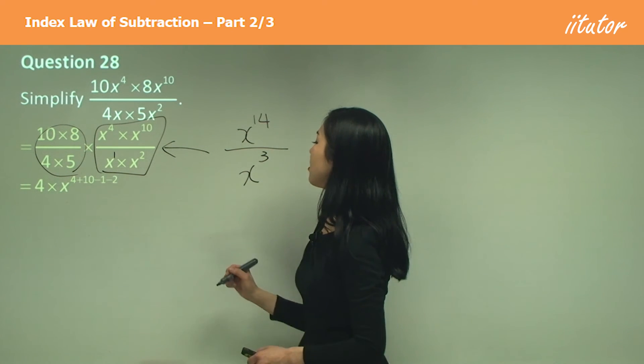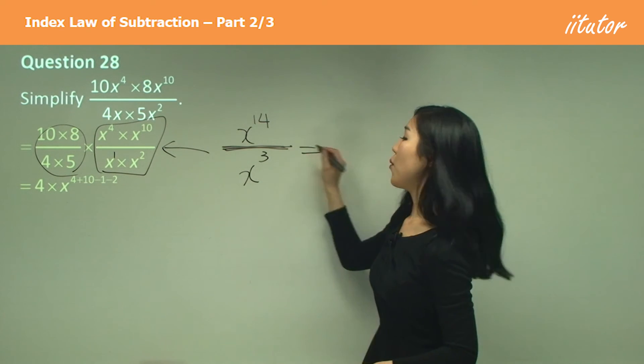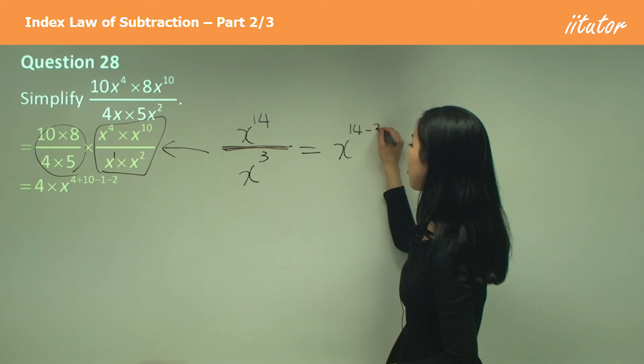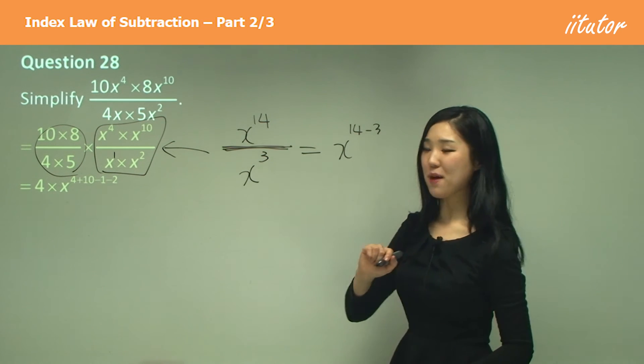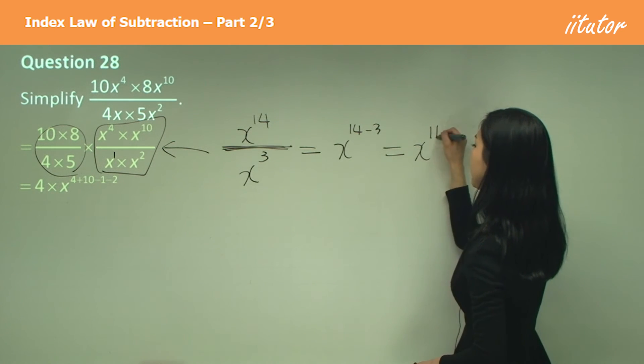Then because we're dividing, we're going to have x to the power of 14 minus 3. We subtract the indices, which will give us x to the power of 11.